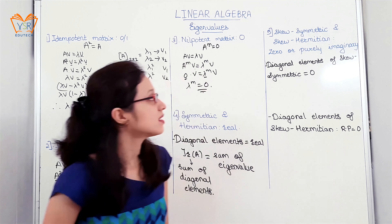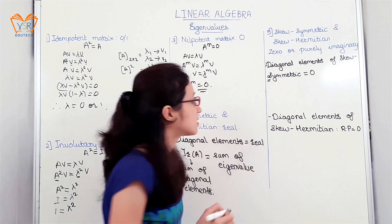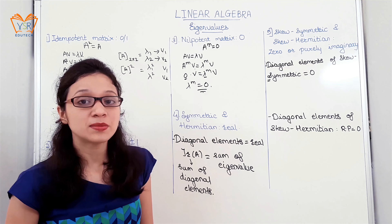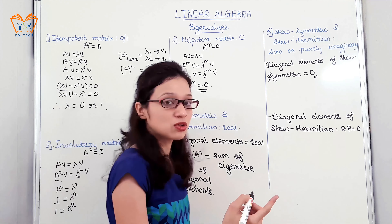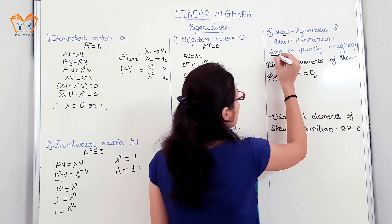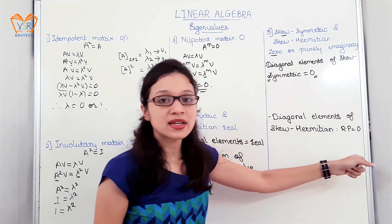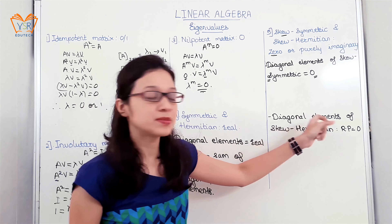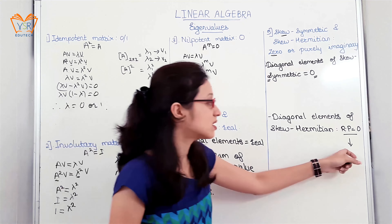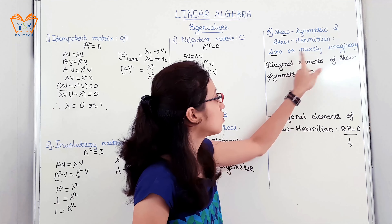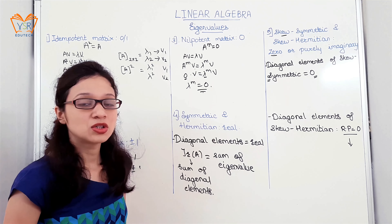The next: skew symmetric and skew Hermitian — eigenvalues are 0 or purely imaginary. For a skew symmetric matrix, the diagonal elements are equal to 0, so the sum of diagonal elements is 0, meaning the sum of eigenvalues is 0, so the eigenvalues are only equal to 0. For skew Hermitian, the real part of the diagonal elements equals 0, so the diagonal elements are only imaginary — either 0 or purely imaginary. We conclude that eigenvalues for skew symmetric and skew Hermitian are either 0 or purely imaginary.